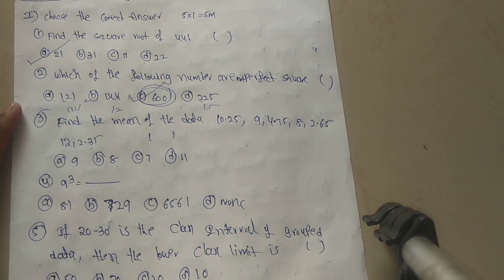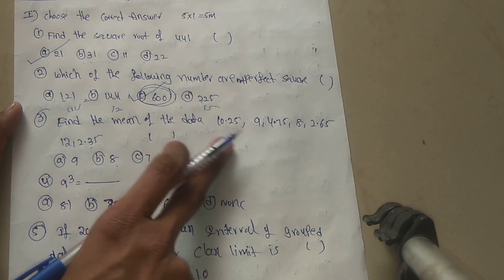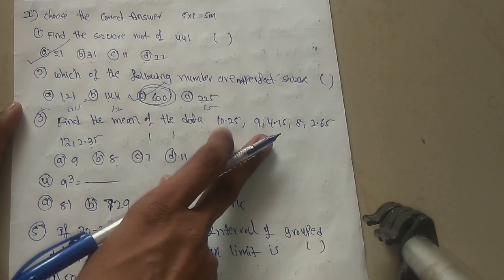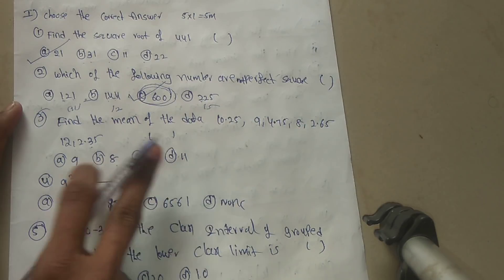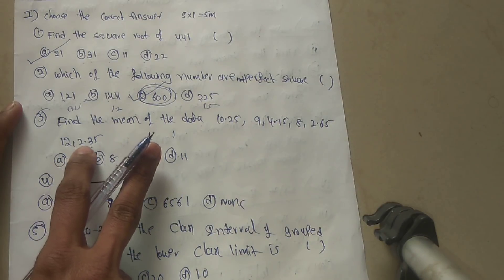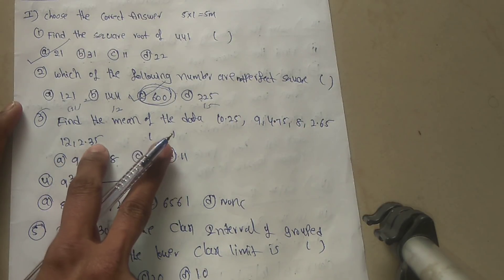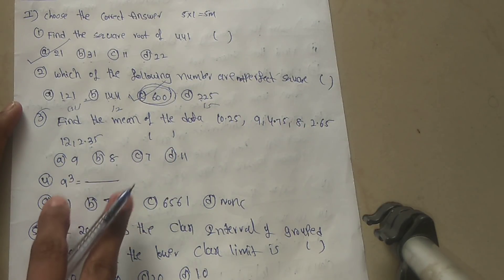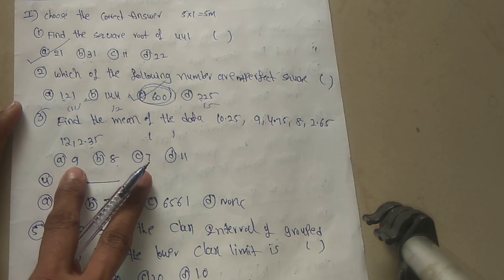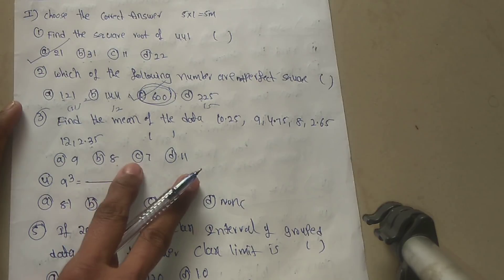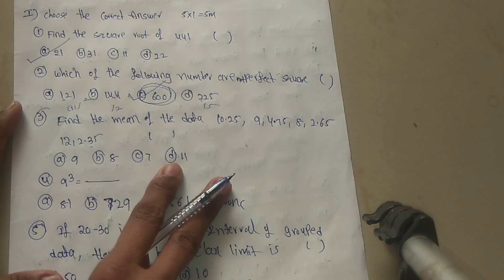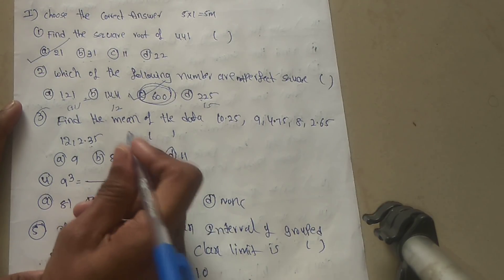Third question: find the mean of the data: 10, 25, 9, 4.75, 8, 2.65, 12, 2.35. Option A: 9, Option B: 8, Option C: 7, Option D: 11.